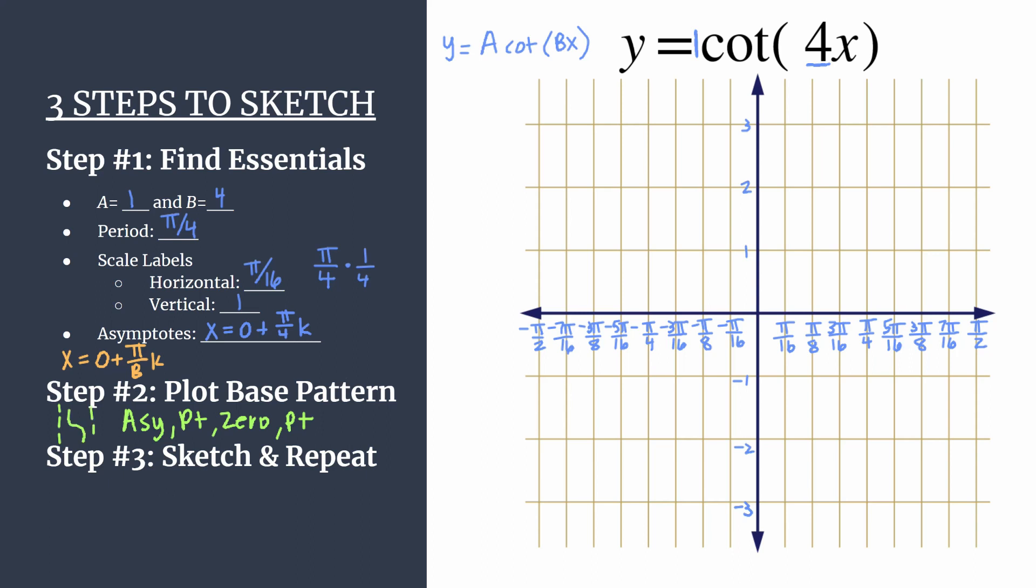Let's go ahead and plot the base pattern. Starting at the y-axis, we have our asymptote here at x equals zero. Our first curve shaping point is going to happen at that first horizontal tick mark at pi over 16. And remember we said that a is going to help us find the y-coordinate here. So for this upper curve shaping point, you just take the value of a as it is. So our point is here at pi over 16 comma 1.